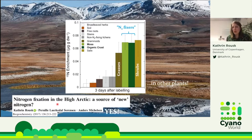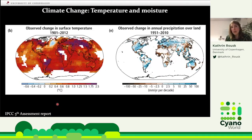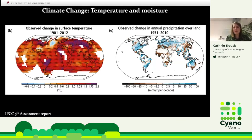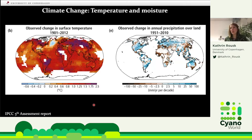Now we know it's important, so we can look at what affects this process. One very important topic is climate change. Figures show that we have changed temperature across the globe and that precipitation patterns have changed quite a lot. Temperature and moisture are really strong drivers of climate change, and we are also interested in how this affects nitrogen fixation in mosses.